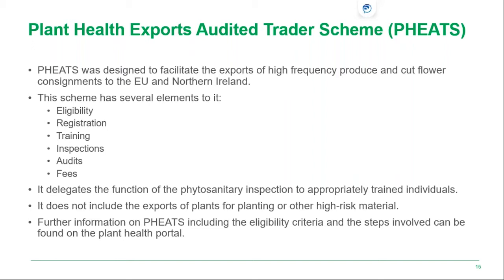If you are exporting fruit, vegetables or cut flowers, you may be eligible for the Plant Health Exports Audited Trader Scheme, known as FEATS. This scheme was put together to help facilitate high-frequency exports of fruit, veg and cut flowers by delegating the phytosanitary inspection to a competent person within the trade who has had sufficient training and has met the requirements. A link on the Plant Health Portal provides information on inspections, audits, fees and how to register your interest. This applies for exports to the EU and Northern Ireland.